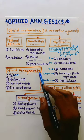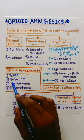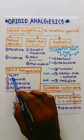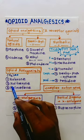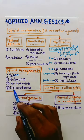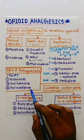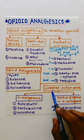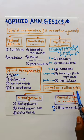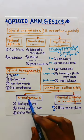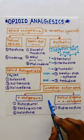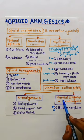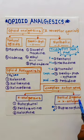Next are opioid antagonists — we have three, N3: naloxone, naltrexone, and nalmefene. Next are complex action opioids, which include kappa receptor analgesics and partial mu agonist and kappa antagonist.